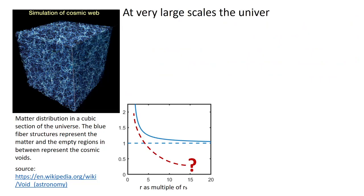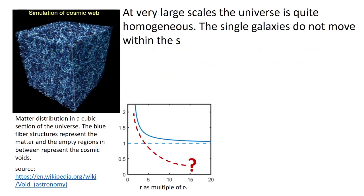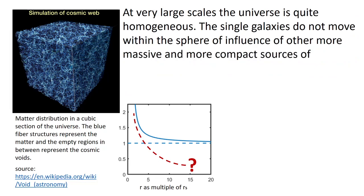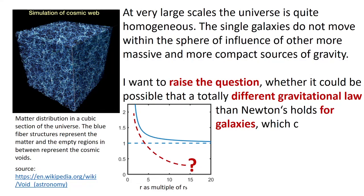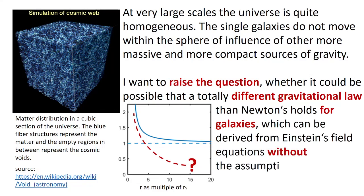At very large scales, the universe is quite homogeneous. The single galaxies do not move within the sphere of influence of other more massive and more compact sources of gravity. I want to raise the question whether it could be possible that a totally different gravitational law than Newton's holds for galaxies, which can be derived from Einstein's field equations without the assumption of a flat background space.